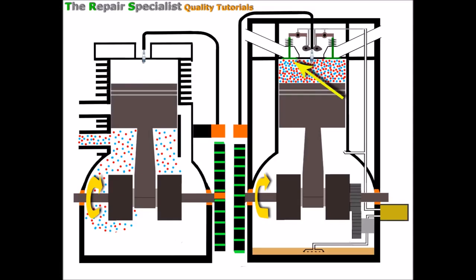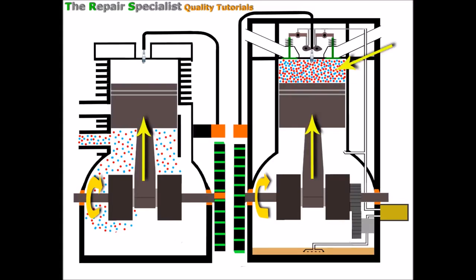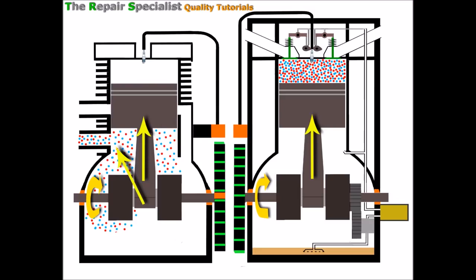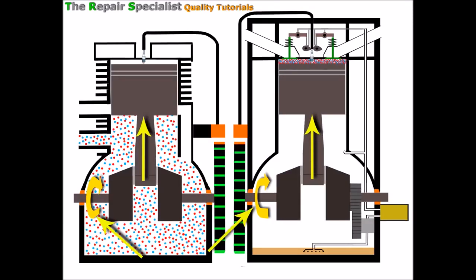With the four-stroke engine the inlet valve is now tightly closed and nothing can go back past it, and it's the same with the exhaust valve, so all of that air and fuel mixture above the piston is now being compressed because it can't go anywhere. But on the two-stroke engine we've still got nothing above the piston — as the piston goes up it's creating a vacuum behind it and drawing in that air and fuel. In the four-stroke all there is underneath the piston is the oil in the sump.